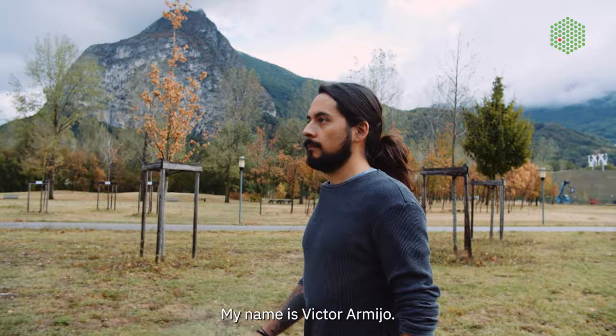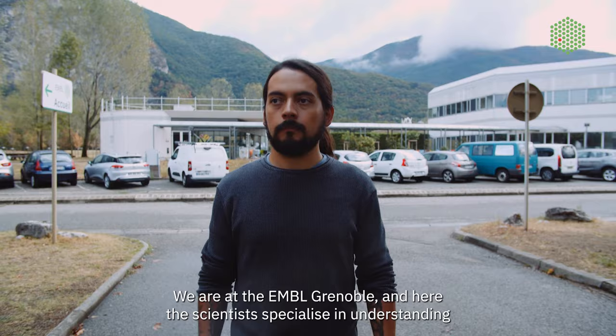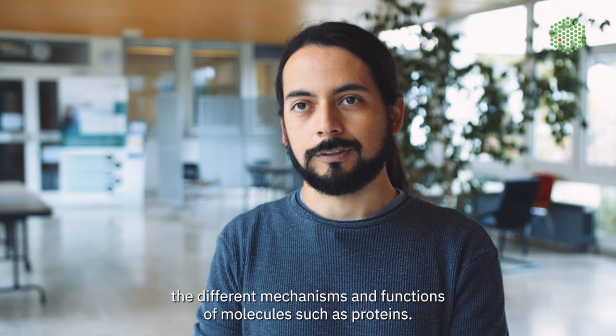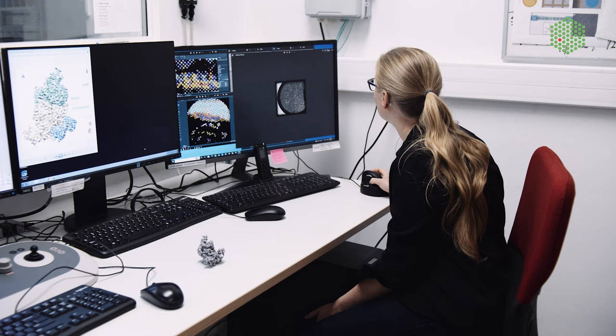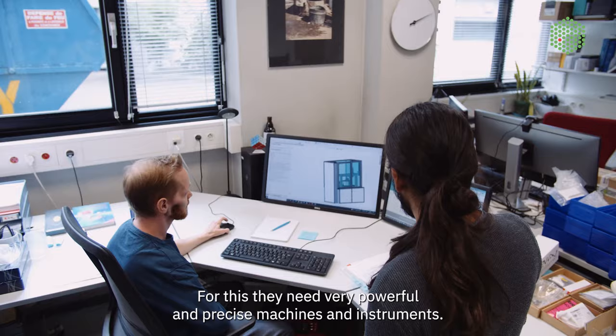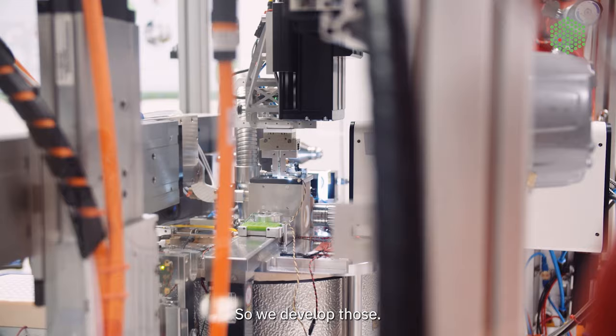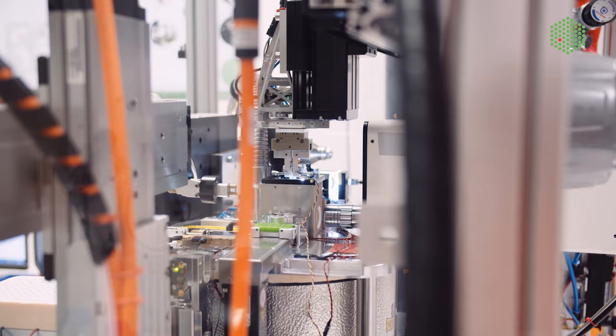My name is Victor Armijo. I'm a Mexican mechatronics engineer. We are at the EMBL Grenoble, and here the scientists specialize in understanding the different mechanisms and functions of molecules such as proteins. The end goal for them is to determine the structure of the molecules at an atomic level. So for this, they need very powerful and precise machines and instruments. So we developed those.